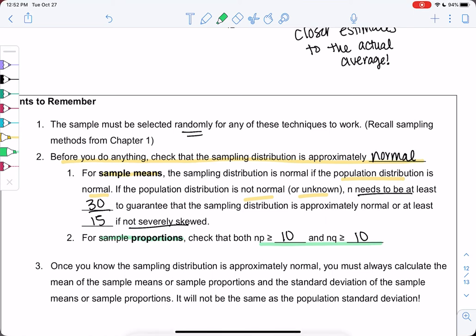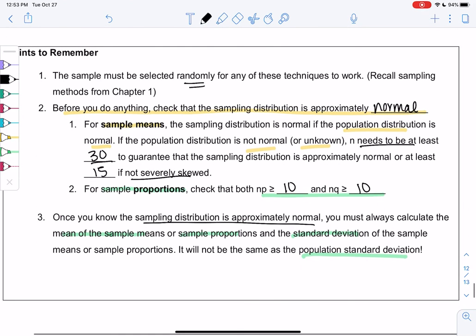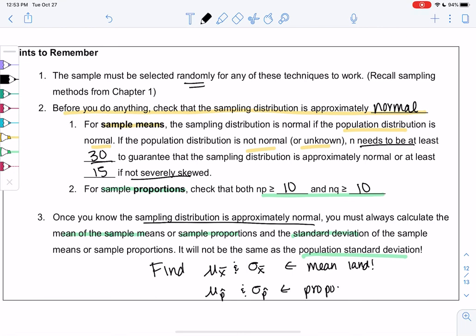Once we know and confirm that our distribution is approximately normal, make sure you don't forget to find the mean of the sample means or proportions and the standard deviation. It is not the same standard deviation that's given. Means are less spread out, so make sure you find μ_x̄ and σ_x̄ for the mean land, or μ_p̂ and σ_p̂ in proportion land. We're never in both at the same time. Now that we know how to use the normal curve, next week in chapter 8 we'll get to figure out what to do with it.